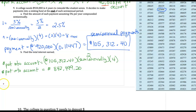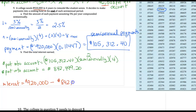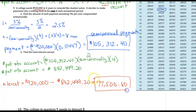To find the interest, we compare the money that was put into the account and the money we get out at the end of four years. Subtracting: nine hundred twenty thousand dollars minus the eight hundred forty-two thousand four hundred ninety-nine dollars and twenty cents that was invested, we get an interest of seventy-seven thousand five hundred dollars and eighty cents. That is the interest only.